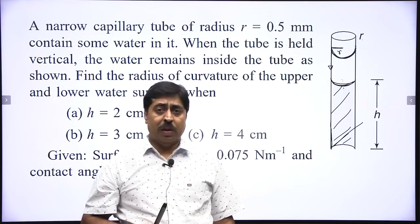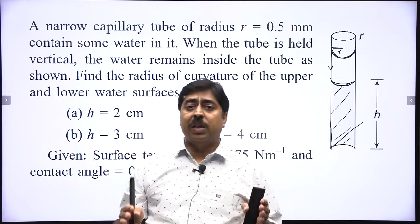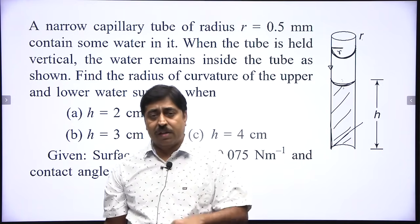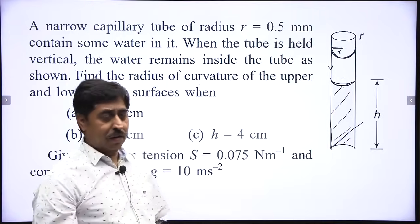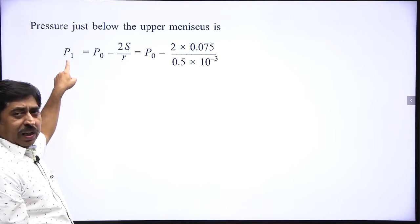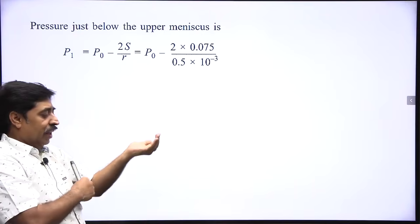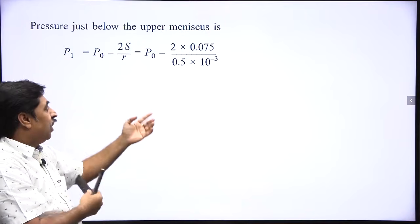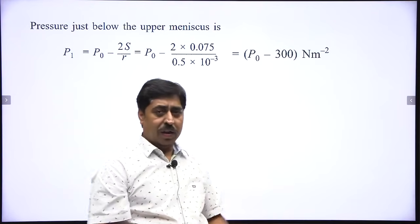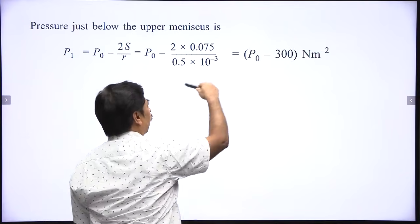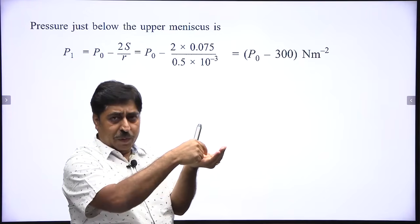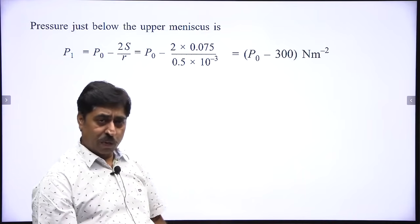In the formula 2s/r, remember that r is not necessarily the radius of the tube — r is the radius of curvature of the curved liquid surface. But when the contact angle is 0 degrees, the tube radius equals the radius of curvature of the meniscus. So pressure just below the upper meniscus, p1, equals P₀ minus 2s/r. Substituting values gives p1 = P₀ minus 300 N/m².